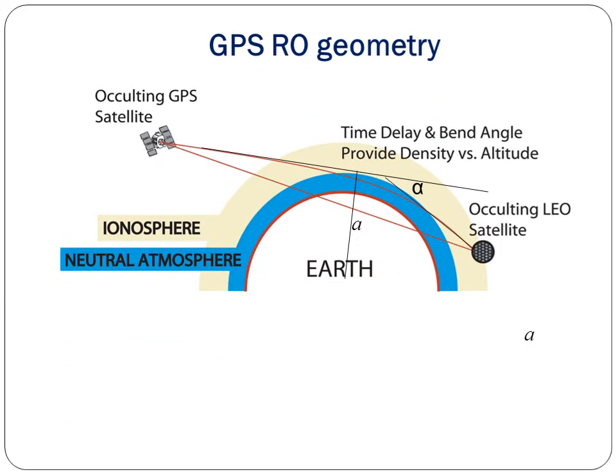The GPS RO geometry involves the earth with its atmosphere — neutral atmosphere and ionosphere — and satellites at different positions: the occulting LEO satellites and the occulting GPS satellites. Data are obtained from these occultations; the time delay and bend angle provide density versus altitude.